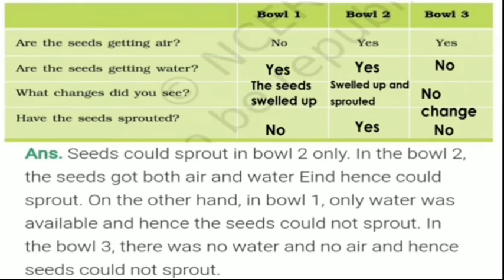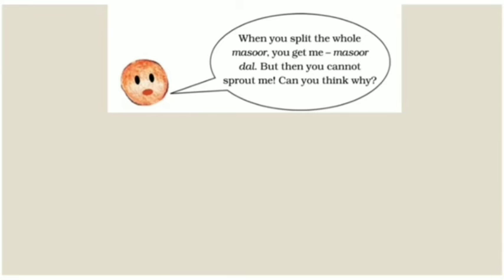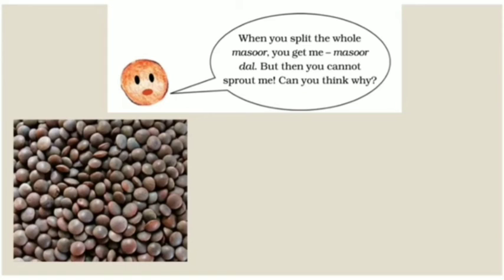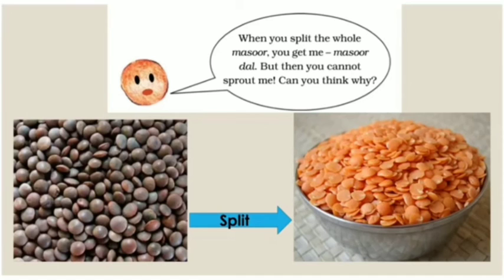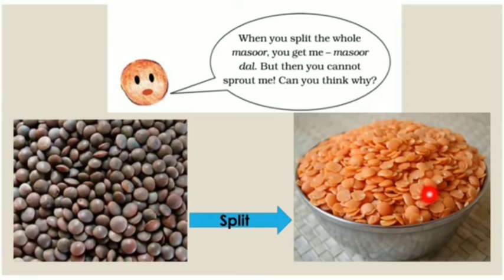Now next page. When you split a whole masoor, you get masoor dal. But then you cannot sprout it. Can you think why? The masoor dal that is orange colored — you cannot sprout it after splitting.